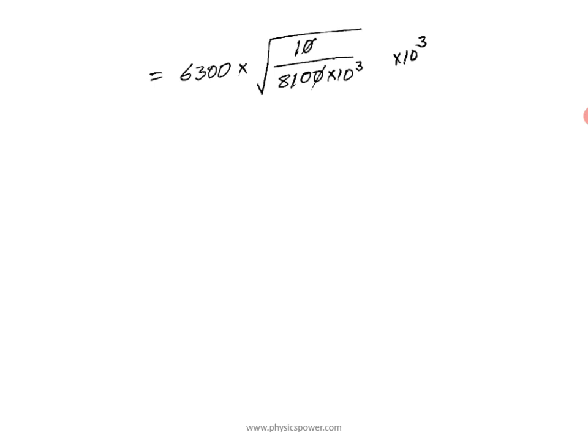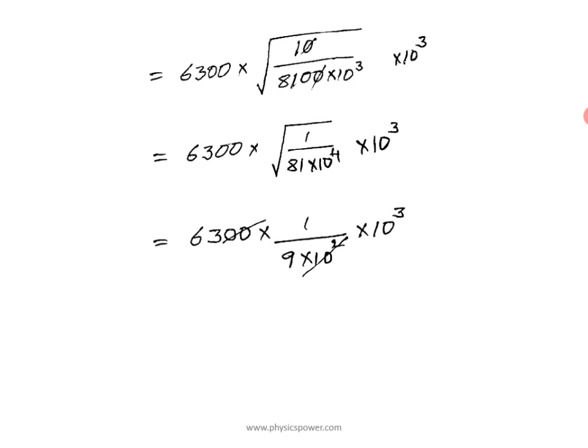We can write the expression as root of 81 × 10⁴. Removing the root gives 9 × 10². The 10² and two zeros cancel, and 9 divides 63 seven times. So the result is 7 × 10³. The units are m/s, and 10³ is km, so the answer is 7 km/s. Generally, orbital velocity is measured in km/s, so this is the answer.